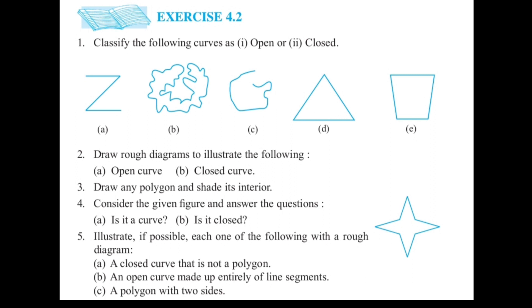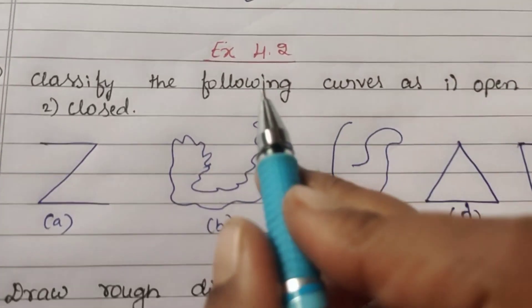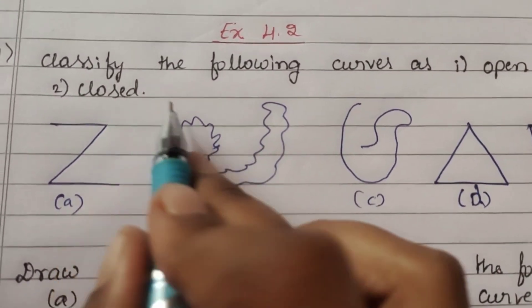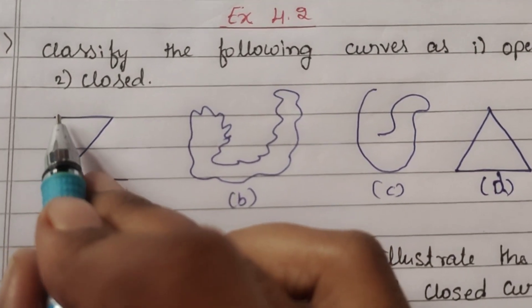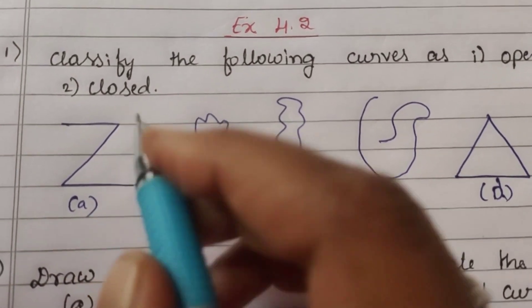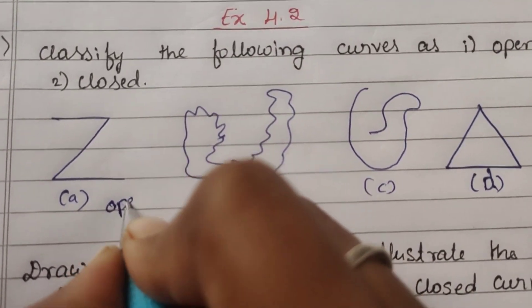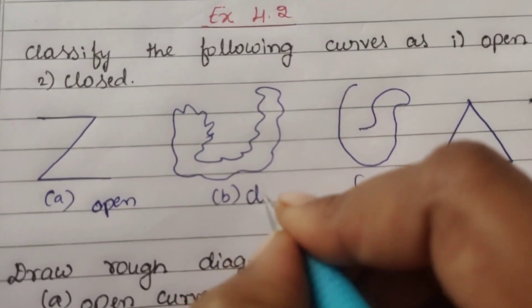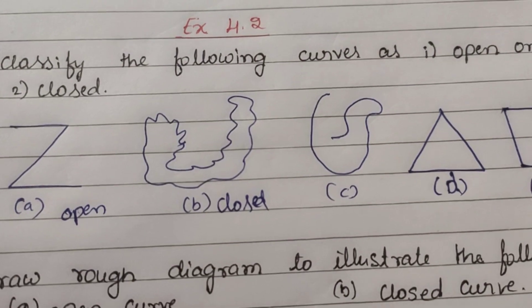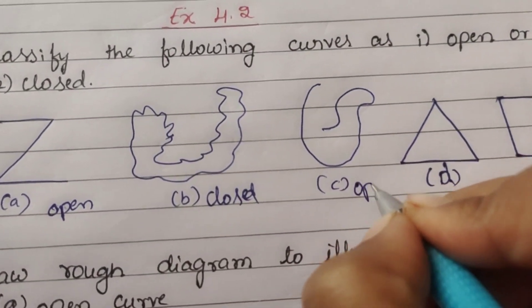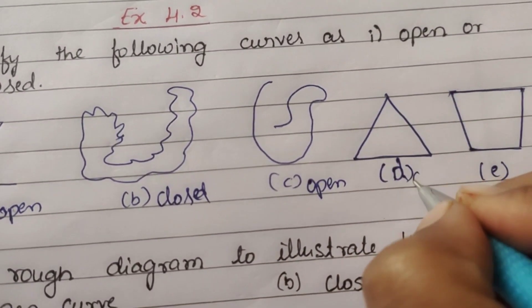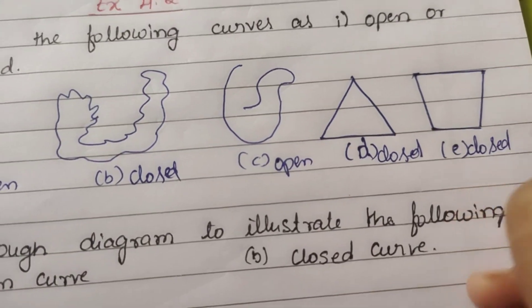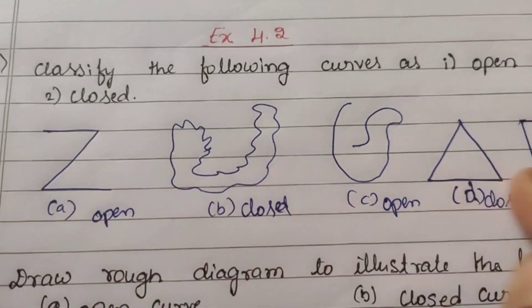Now let's solve exercise 4.2. First question: Classify the following curves as open or closed. First one: starting point is here, end point is there, so this is open. Second one: starting point and ending point meet, fully closed, so this is closed. Third one: this is open. Fourth: this is closed. And this is also closed. You need to differentiate between them.